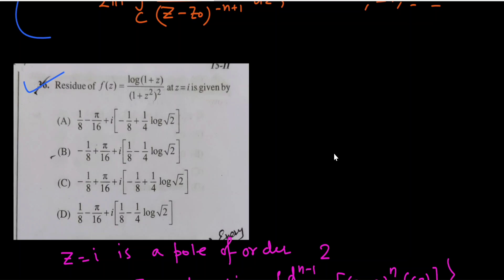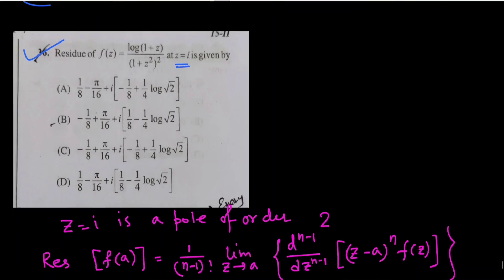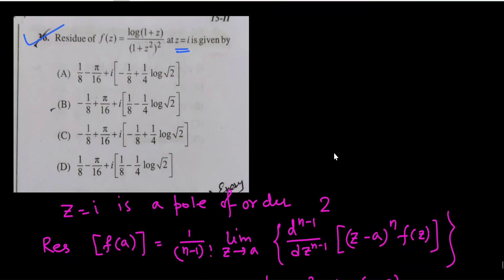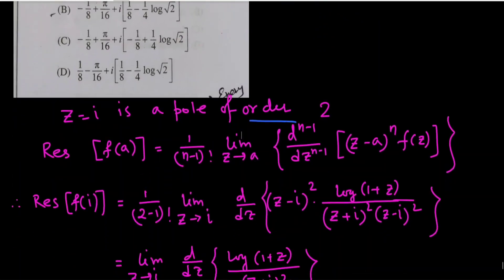The next question asks for the residue of f(z) = log(1+z) / (1+z²)² at z = i. We note that z = i is a pole of order 2 for this function, since (1+z²)² = ((z+i)(z-i))² makes z = i a pole of order 2.